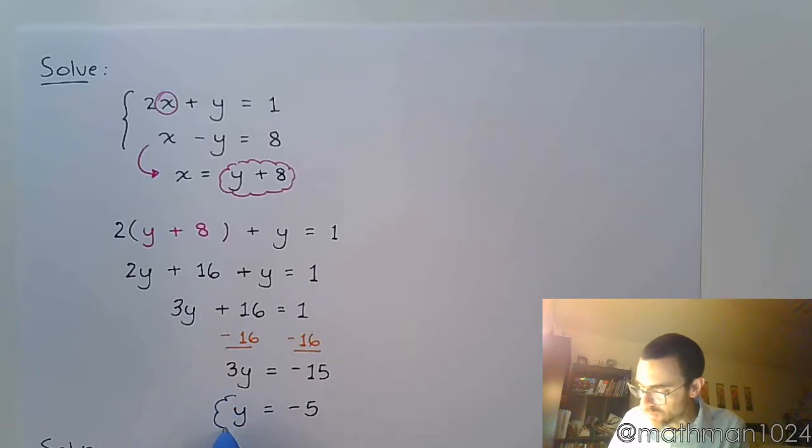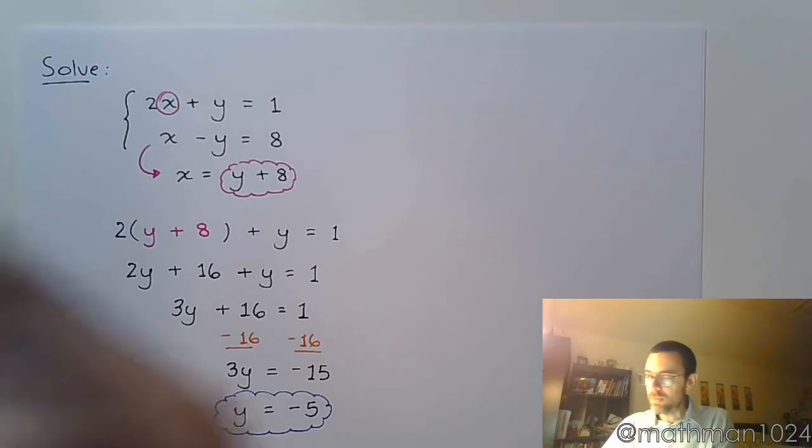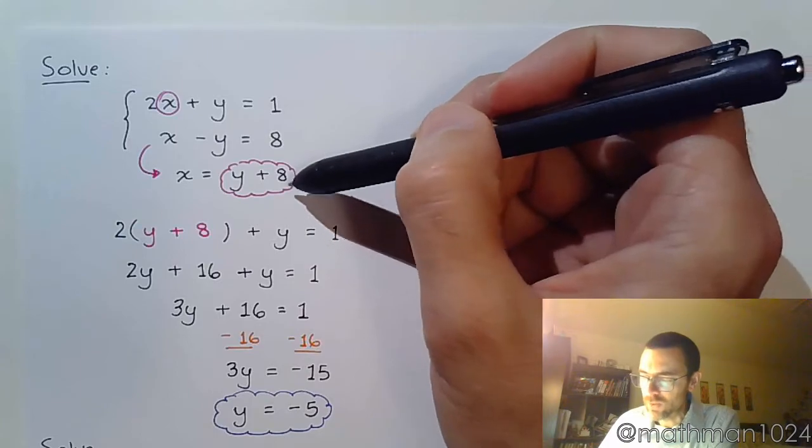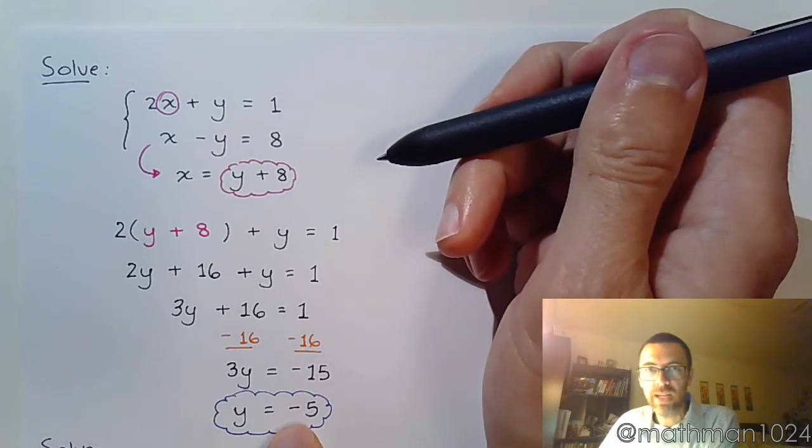Now, as we've already mentioned, that's not the end of my problem. We've got Y equals negative 5, which is great, but that's only half of the ordered pair. So what we do is we come back up here, and I prefer you take one of the original equations. You could also take this one. Let's take one of the original ones and plug in negative 5 and get what X is.